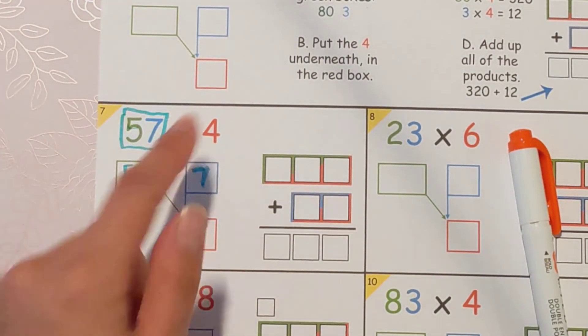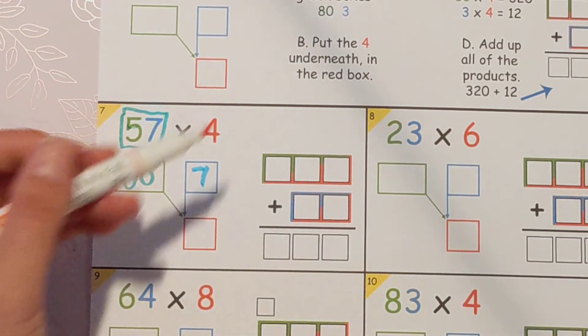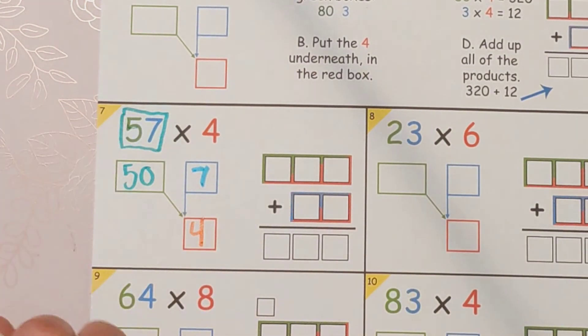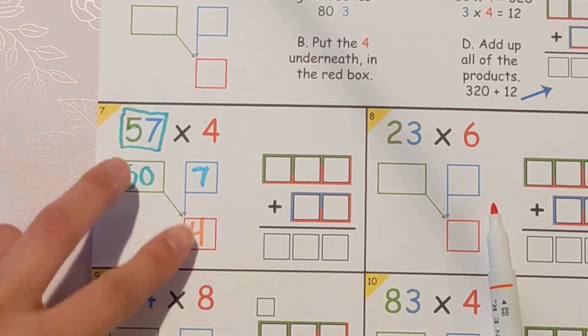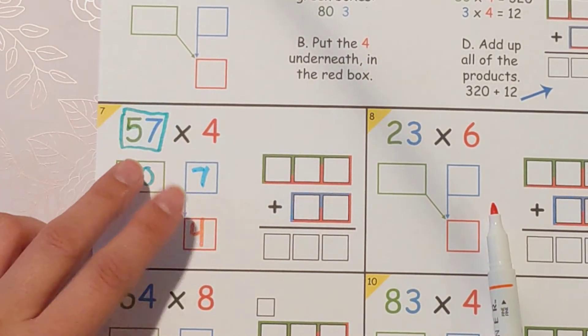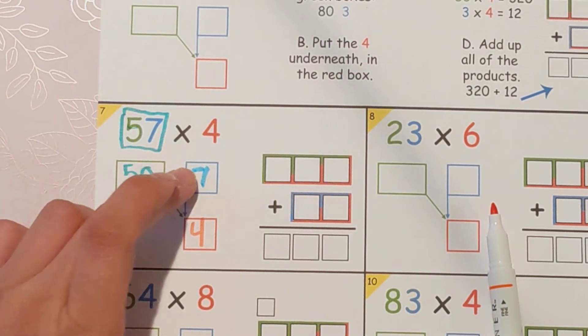50 and 7, and then they're each going to multiply against the 4. So the 4 goes down here and now we're going to do two different multiplication problems. One, two. 50 times 4, 7 times 4.